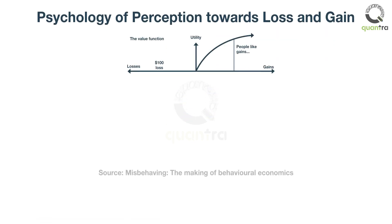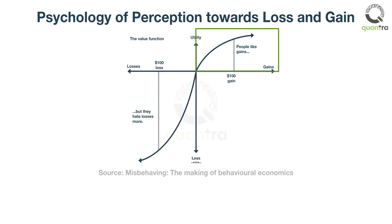Human psychology plays an important part too. As demonstrated by the value function, you can see that people perceive gains and losses differently. While you will be a little happy with a $100 gain, you will be doubly scared when you hit a $100 loss. Simply speaking, a loss hurts twice as much as the happiness you get for a gain of the same amount.